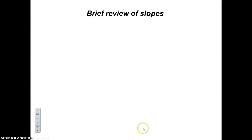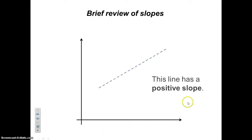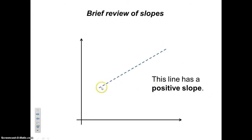We're going to do a brief review of slopes. If we have a line that's going up, it has a positive slope. And because the line is straight, the slope is constant. So it's a positive, constant slope.